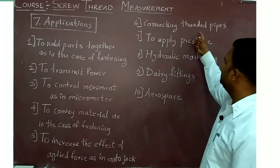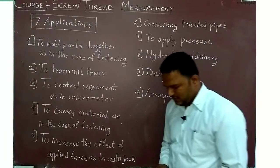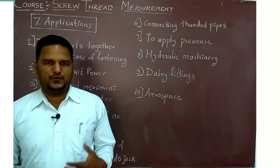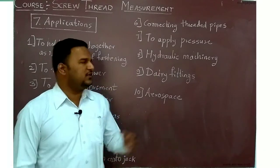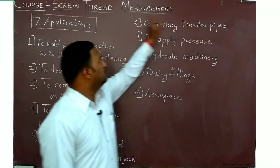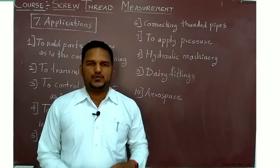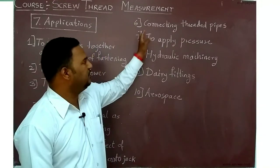Next application is connecting the threaded pipes. During the assembly of the flow or the transmission line we connect the pipes by the use of screw thread. Two pipes get connected and we get the flow.